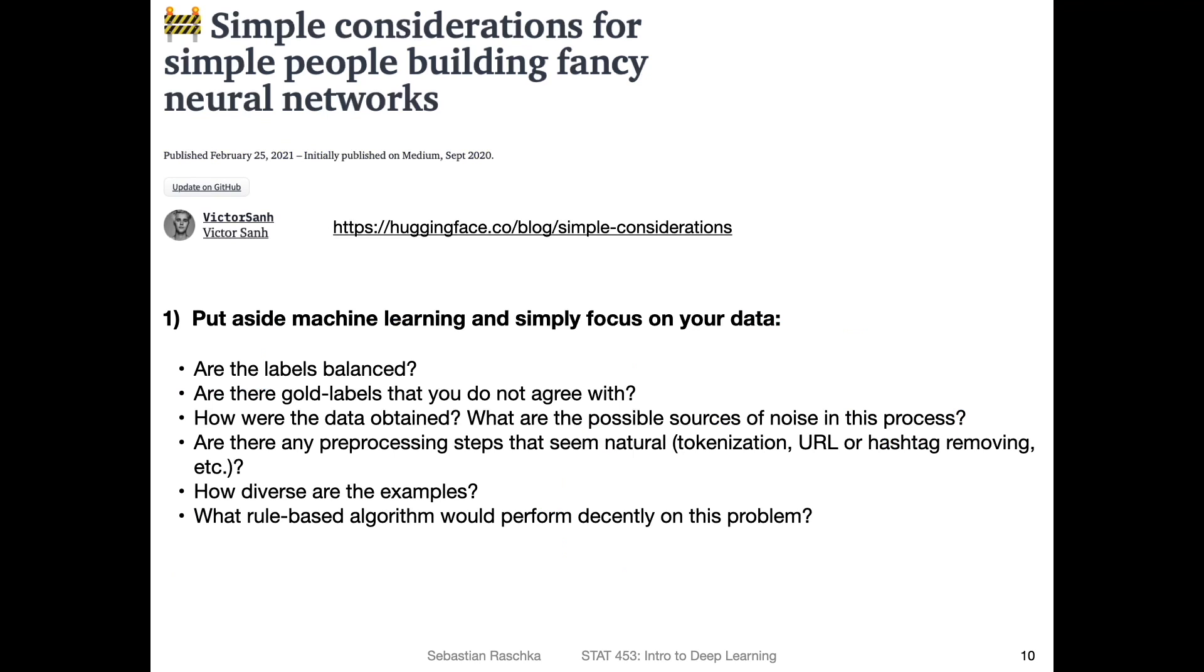I also saw this cool article this week called Simple Considerations for Simple People Building Fancy Neural Networks. This is an article highlighting some of the things you should think about when building a model or also when debugging a model. Since you are now working on your class projects, I thought it was a nice summary that I wanted to share with you, explaining and going over some tips in practice. The first step would be putting aside machine learning and simply focusing on your data. Before you start applying a model to your data, just take a look at your data and get a feeling for it. For example, looking at whether the labels are balanced, like getting a feeling for whether they're balanced or not, whether they have the same ratio for the class labels, same proportions.